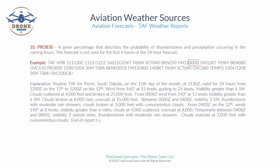From zero hundred Zulu on the 12th: winds from 140 degrees at 12 knots, visibility greater than six statute miles, broken clouds at 8,000 feet, overcast at 15,000 feet.